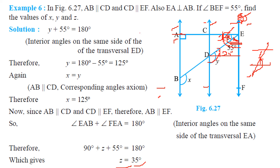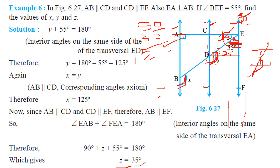Y is 125 degrees. Now this angle has to be equal to that angle because these two are parallel lines. When we have parallel lines and draw the transversal, the alternate angles are equal. So X will also be equal to 125 degrees. This is the observation method — there is another method by which you can solve this as well.